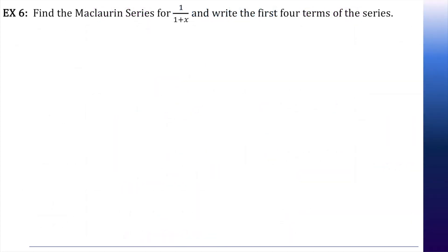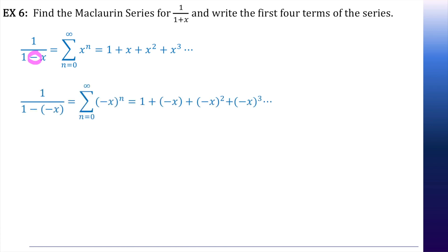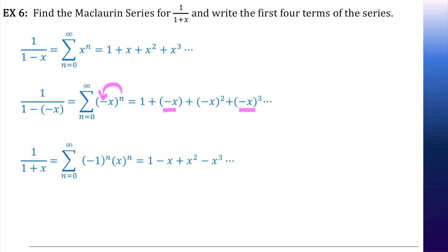Example 6: find the Maclaurin series for 1 over 1 plus x. We just learned 1 over 1 minus x, so how do we manipulate this? I need this to become a negative. A negative times a negative is a positive, so for all of the x's, let's plug in a negative x. When we plug in a negative x, it becomes an alternating series because all of the odd powers are now negative. Taking that n and distributing it through to the negative, 1 over 1 plus x is now the alternating infinite series of x to the n.